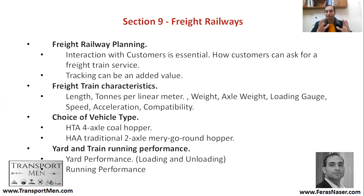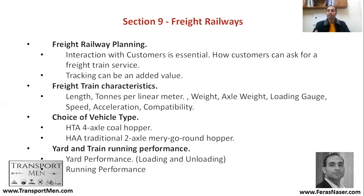Freight train characteristics are quite different from passenger trains. You can see large locomotives in the United States, for example in companies like BNSF or Union Pacific, noting the length of the train and tons per linear meter. Some freight trains can reach 40 tons per axle, making them heavy and long vehicles. Sometimes using a locomotive, and loading gauges must account for the size of the vehicles.